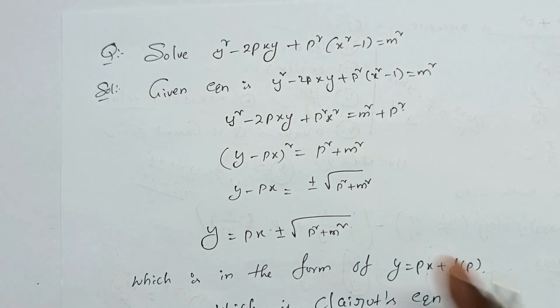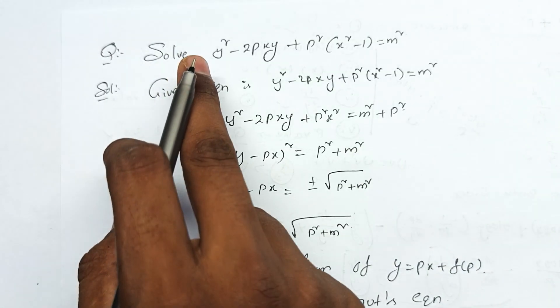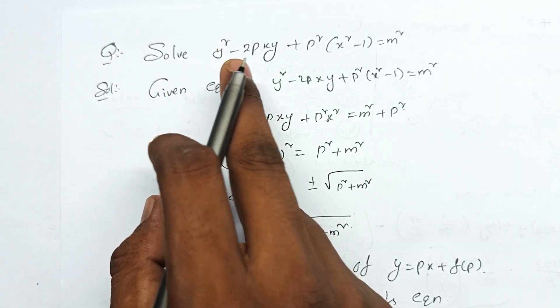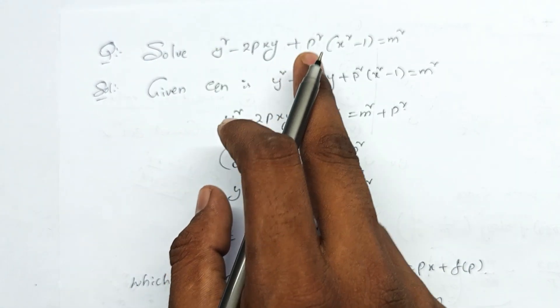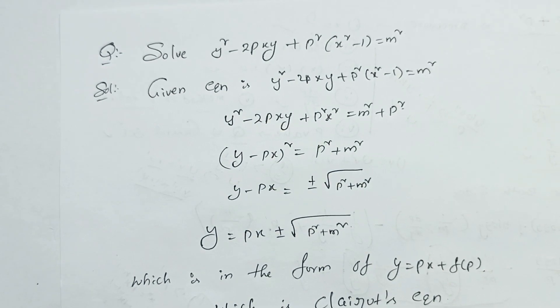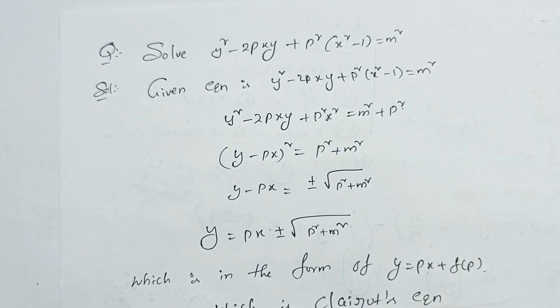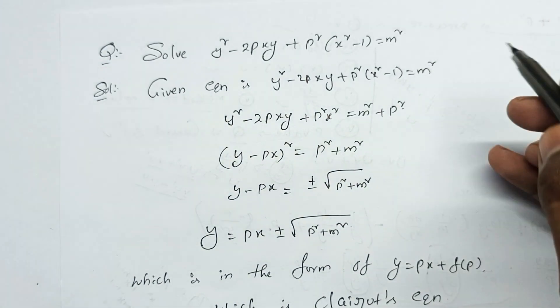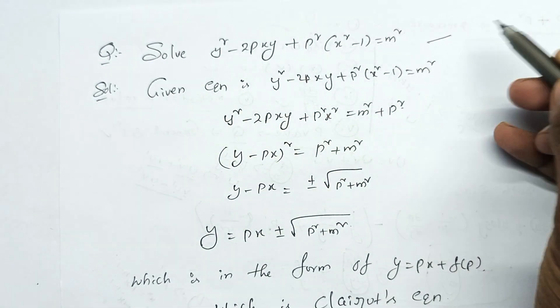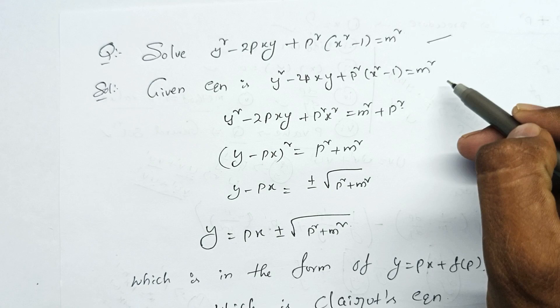Question: Solve y squared minus 2pxy plus p squared into x squared minus 1, equal to m squared.